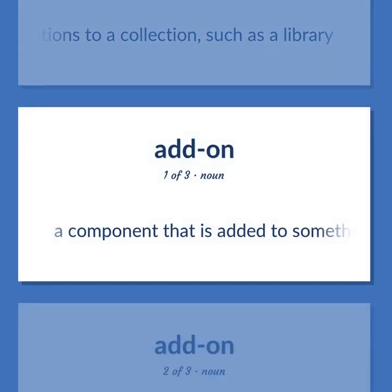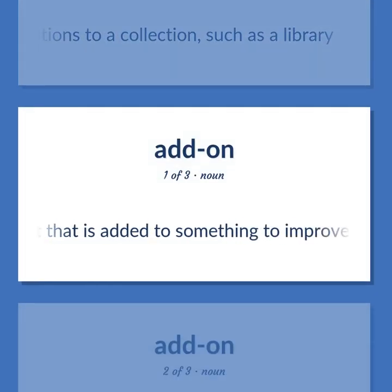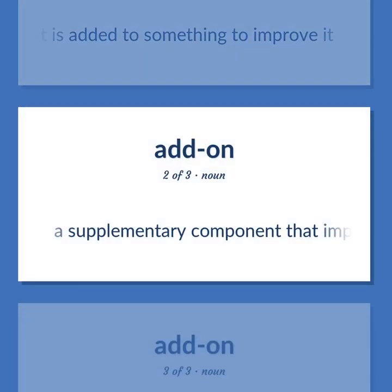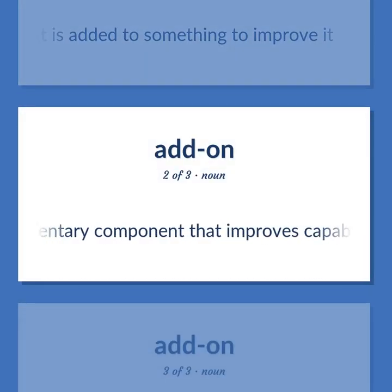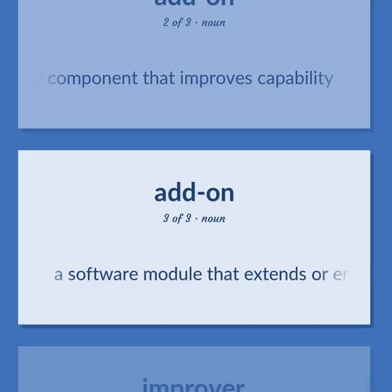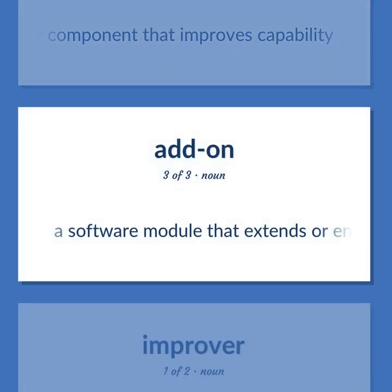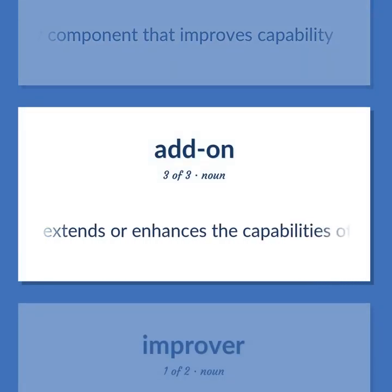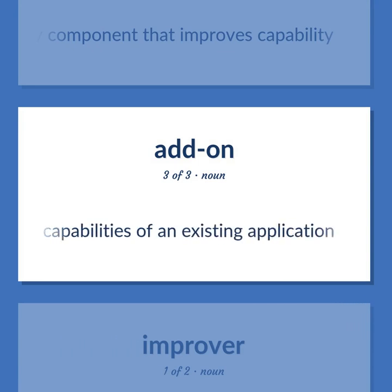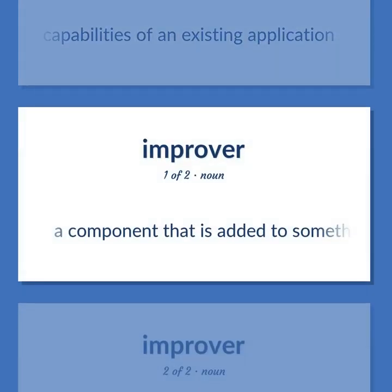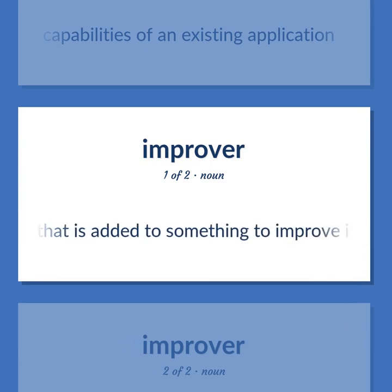Add-on: A component that is added to something to improve it. A supplementary component that improves capability. A software module that extends or enhances the capabilities of an existing application. A component that is added to something to improve it.